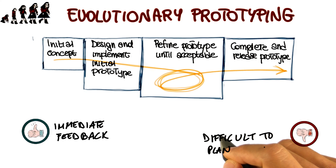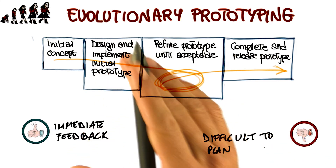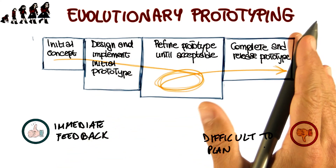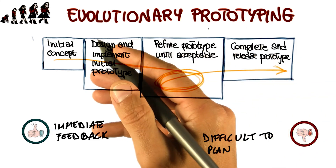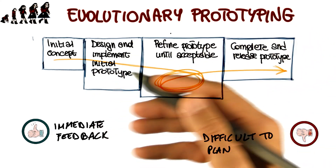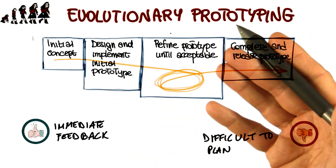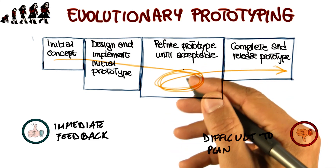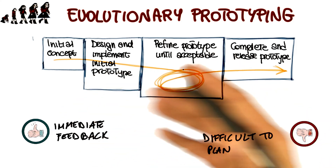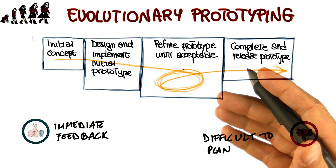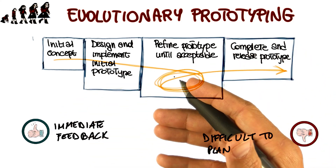Before we move to the next software process model, it's worth noting that there are many different kinds of prototyping, so evolutionary prototyping is just one of them. For example, throwaway prototyping is another kind in which the prototype is just used to gather requirements, but is thrown away at the end of the requirements gathering, instead of being evolved as it happens here.